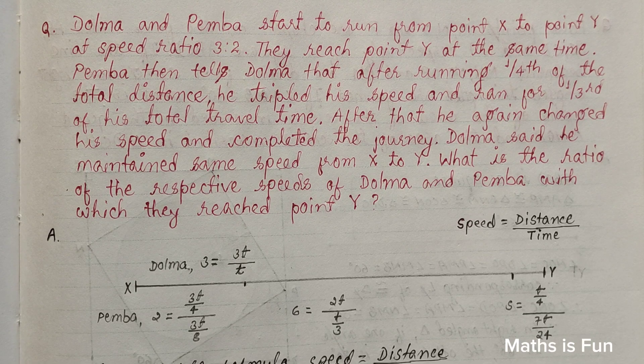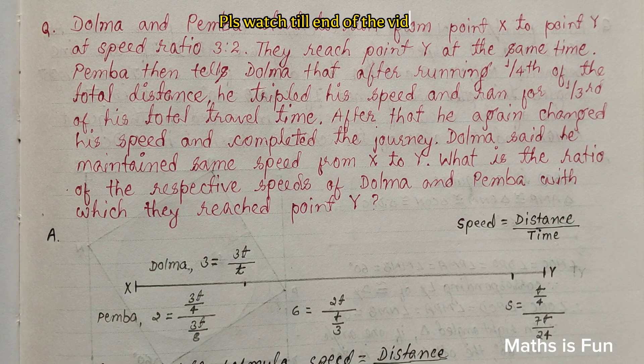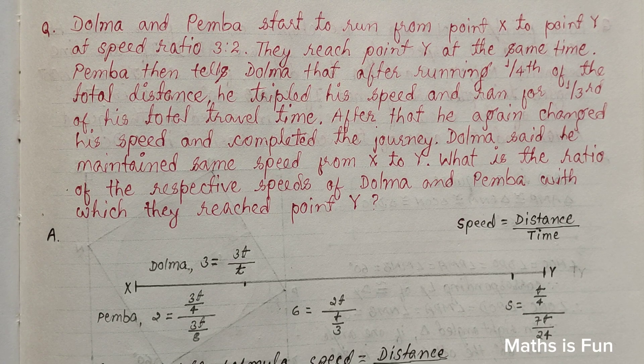Hello math lovers, today's question is: Dolma and Pemba start to run from point X to point Y at speed ratio 3 to 2, they reach point Y at the same time.